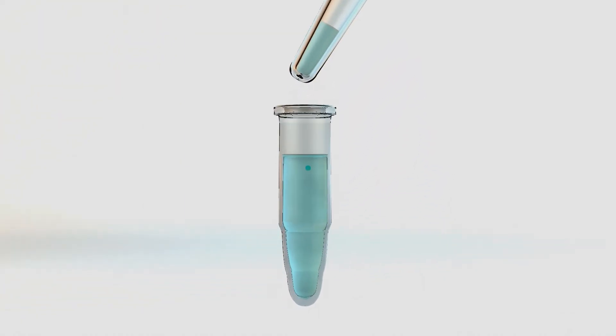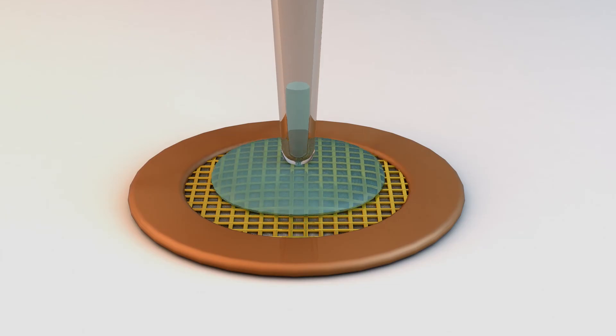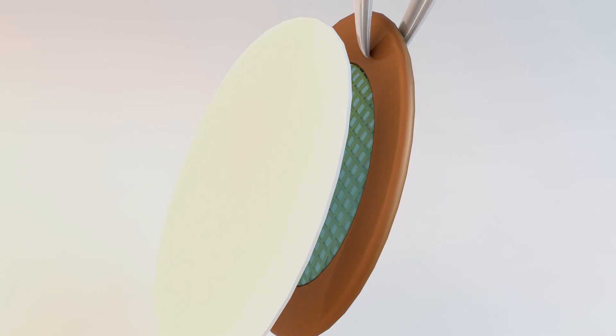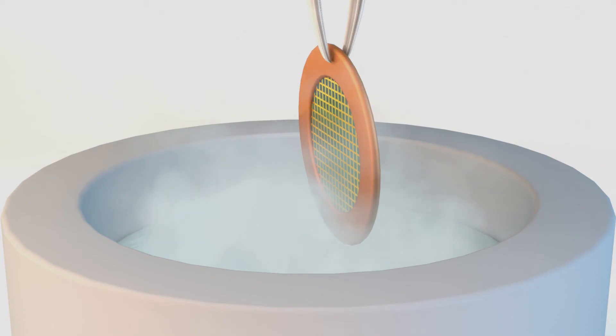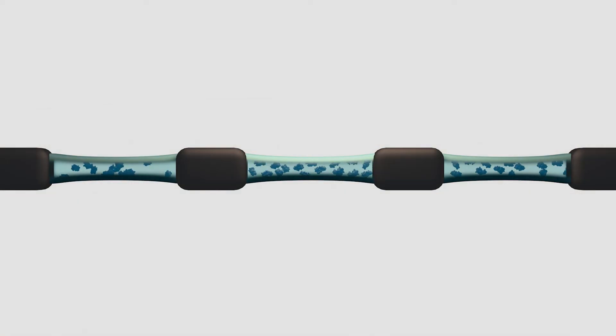Cryoelectron microscopy starts with the preparation of a pure sample of protein in water. The sample is then frozen in liquid ethane so rapidly that ice crystals cannot form and the protein molecules are held in their natural shape in a very thin sheet of ice.